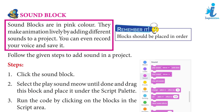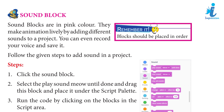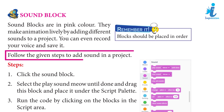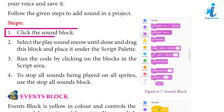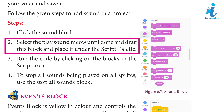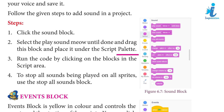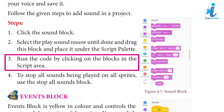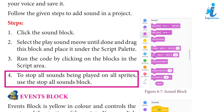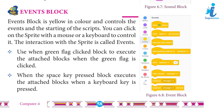Sound blocks are in pink color. They make animations lively by adding different sounds to a project. You can even record your voice and save it. Remember: blocks should be placed in order. Follow the given steps to add sound in a project. Step 1: Click the Sound block. Step 2: Select 'Play Sound Meow Until Done' and drag this block to place it under the script palette. Step 3: Run the code. Step 4: To stop all sounds being played on all sprites, use the 'Stop All Sounds' block.